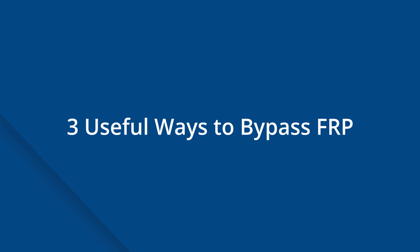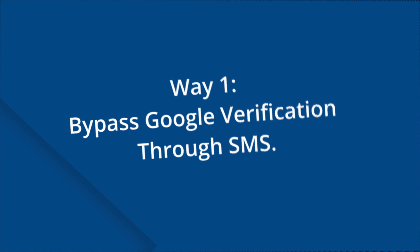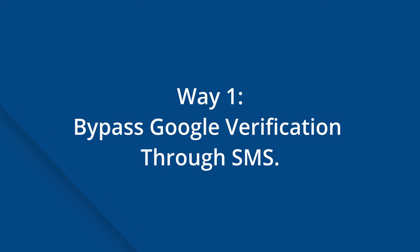Now let's dive right in. Part one covers three useful ways to bypass FRP. Way number one is to bypass Google verification via SMS. This method is a commendable way to bypass your Google account with the help of just your SMS, and it can bypass your Google account without any problem.